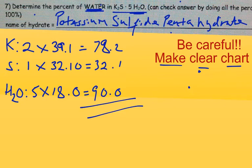You will add those guys up. So what we're simply doing here, this is a perfect example of calculating GFM, the mass of the whole thing. So you will get 200.3 as your total mass.